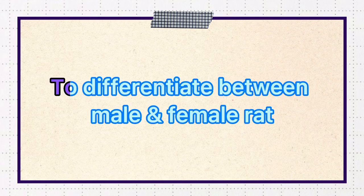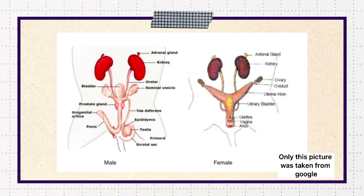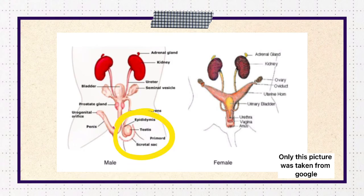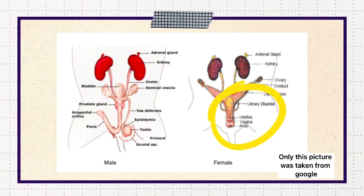Lastly, there are also parts that cannot be seen directly, which is the urogenital system. This is used to differentiate between male and female rats. For male rats, there will be testes which are located in the scrotal sac. For female rats, there will be a short duct leading to the urinary bladder, which is the vagina.